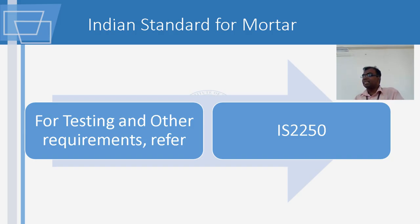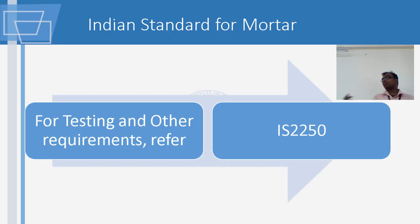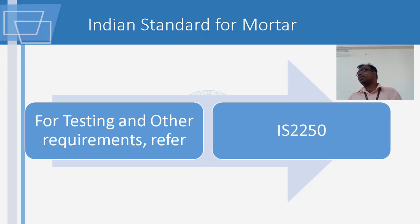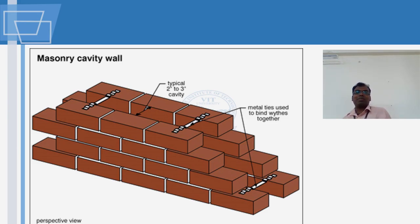We are going to now arrange the units in some pattern. Why is it important that we have to arrange the blocks in a pattern? Why not do it as we like? The reason is, if you do it as you like, there is a chance that you will have vertical joints. If the vertical lines come in the same row, all the load is getting transferred and it is a plane of weakness.